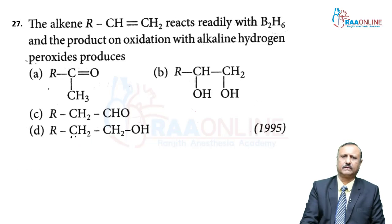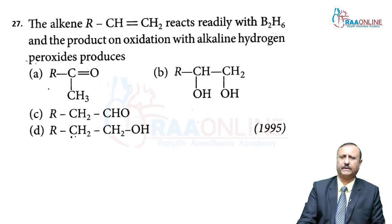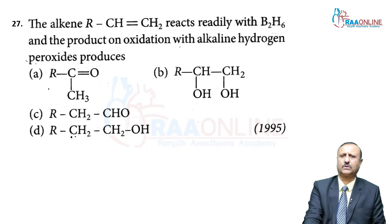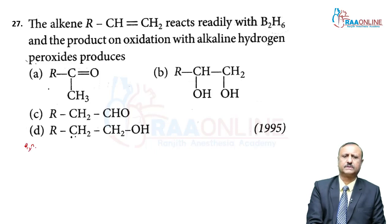Question 27, asked in NEET 1995: The alkene RCH=CH₂ reacts readily with diborane (B₂H₆), and the product on oxidation with alkaline hydrogen peroxide produces what? First, write the alkene RCH=CH₂.